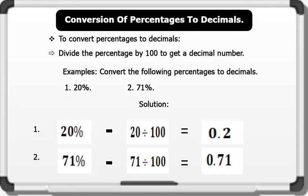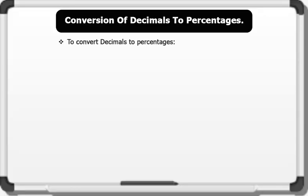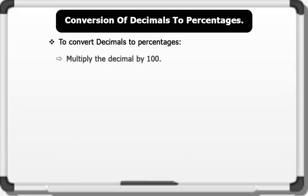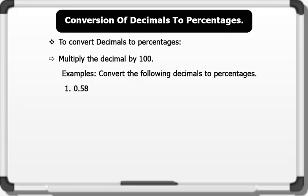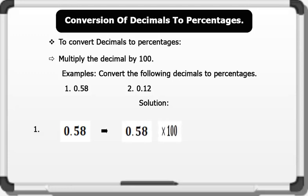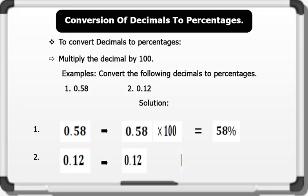Now let's see how we can convert decimals to percentages. To convert decimals to percentages, we simply multiply the decimal by 100. Examples: 1) 0.58 — multiplying by 100 equals 58%; 2) 0.12 — multiplying by 100 equals 12%. That's brilliant.